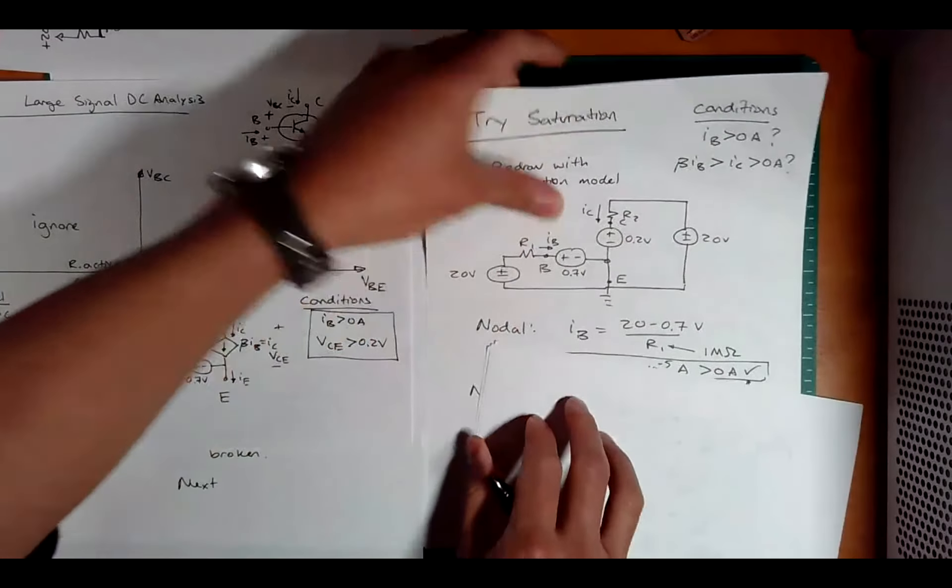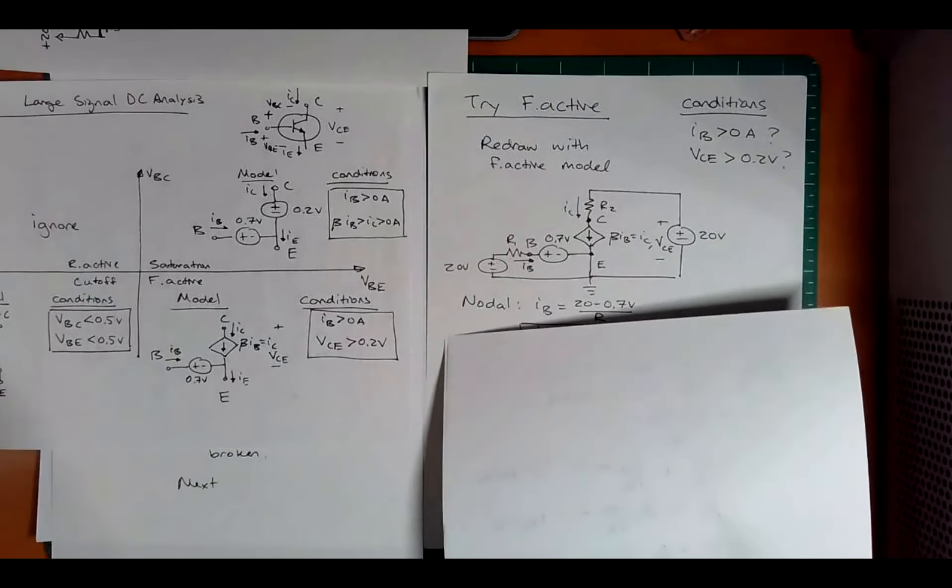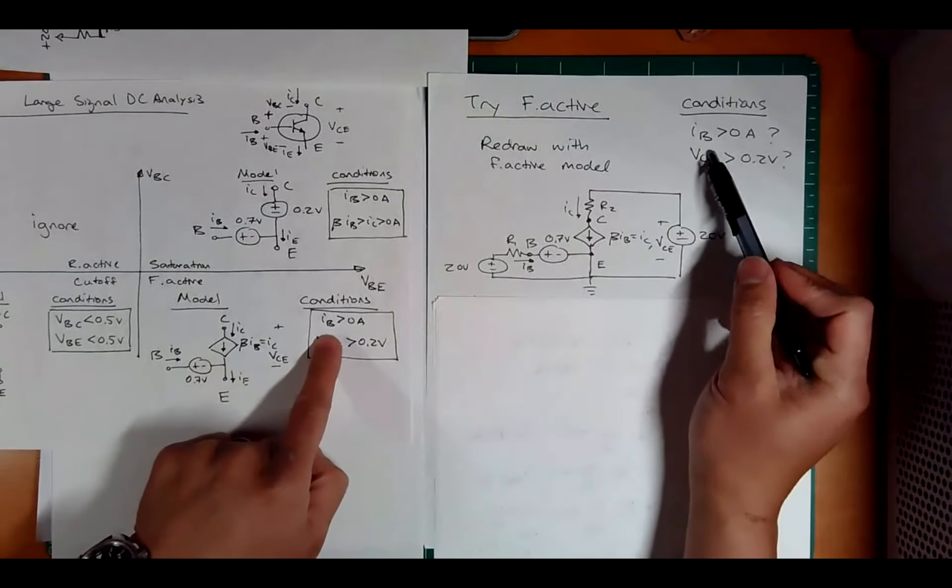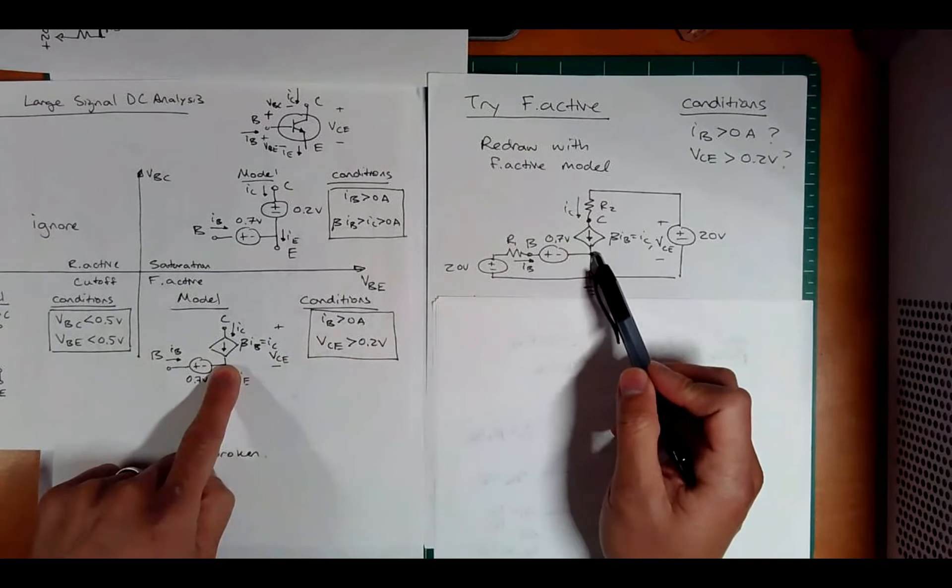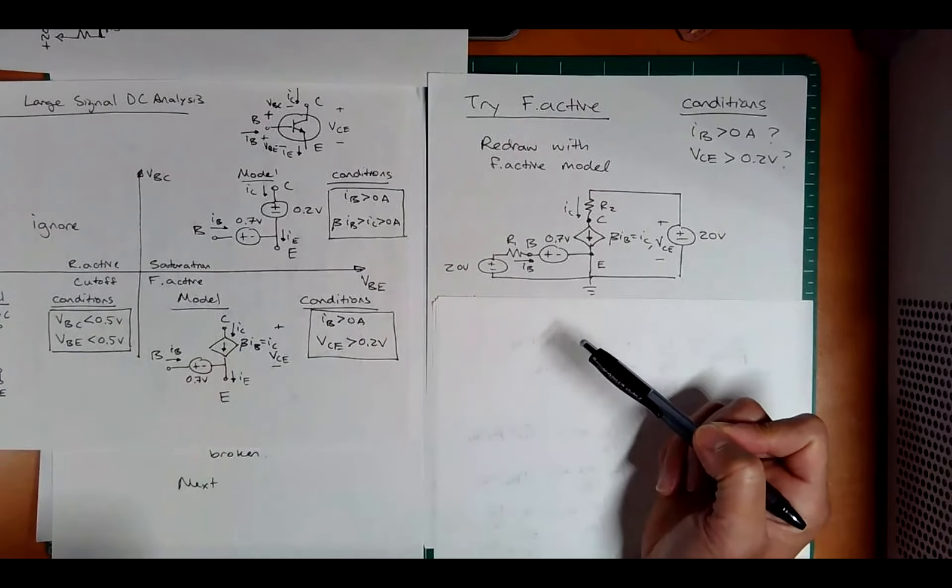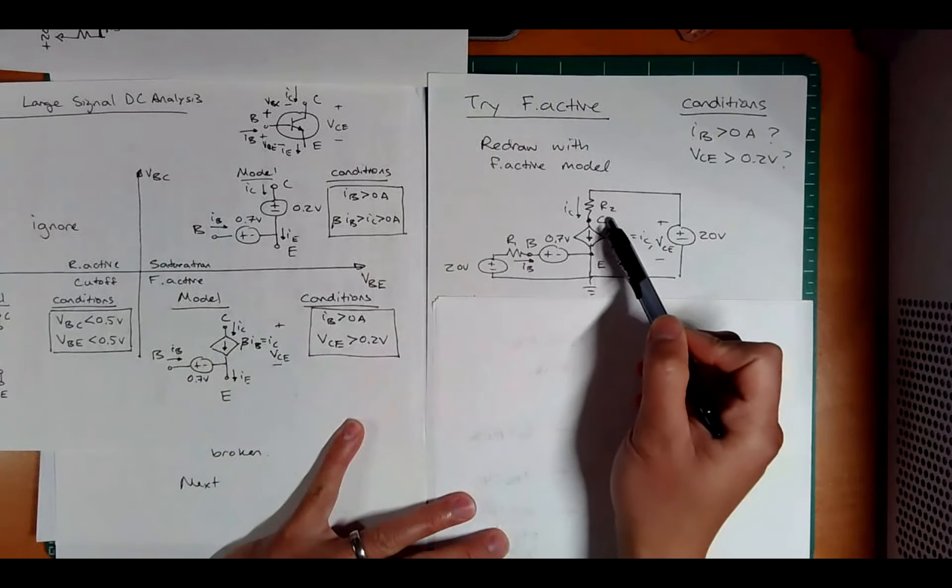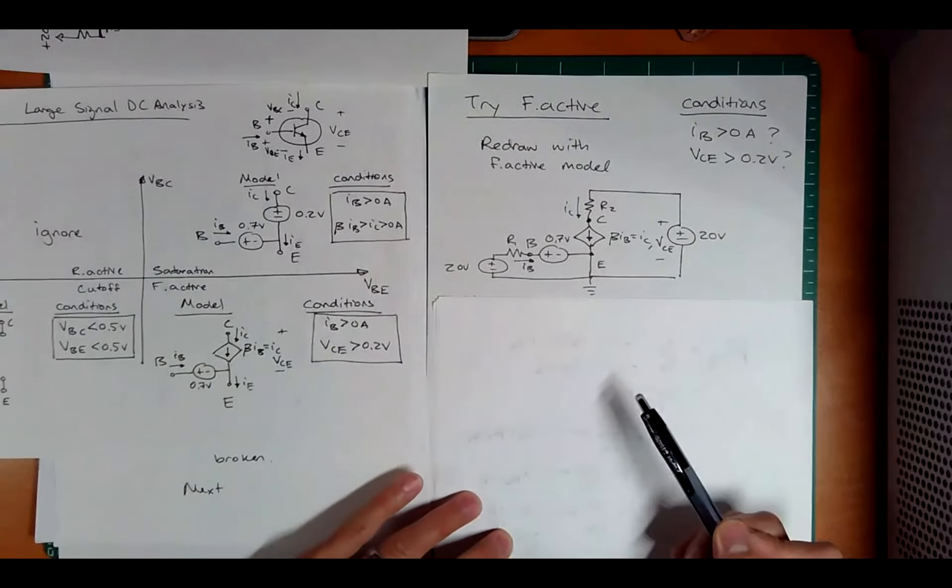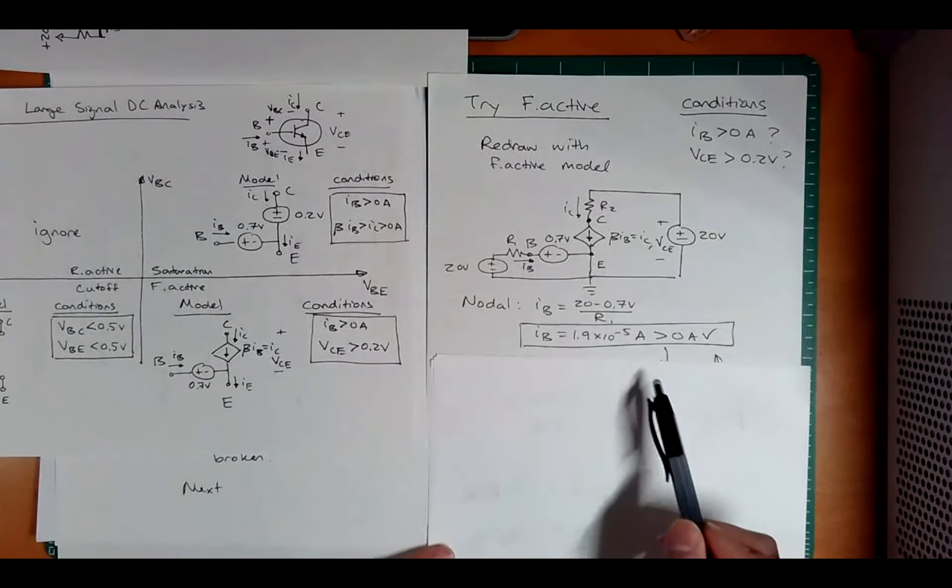So I hope you're seeing that this is actually not too bad. Again, your 250 analysis comes into play. So let's go to the next one. So in the next one, now guessing the forward active model, we have these two conditions: IB greater than zero, VCE is greater than 0.2. So I've replaced it carefully. I got my voltage source and my current controlled current source here. I put in VCE. Notice VCE is across the dependent source.